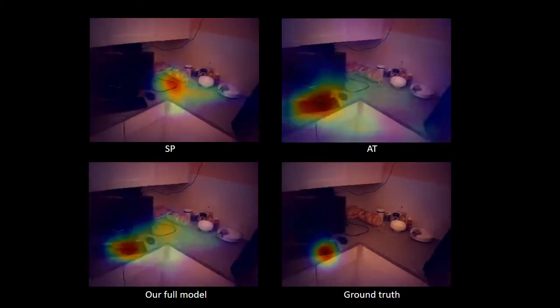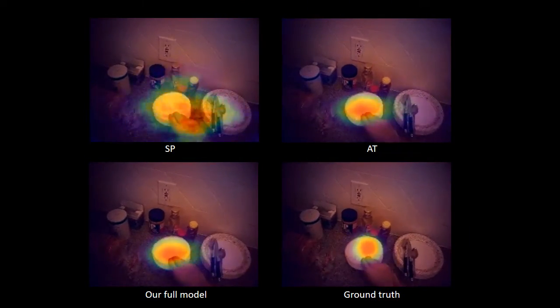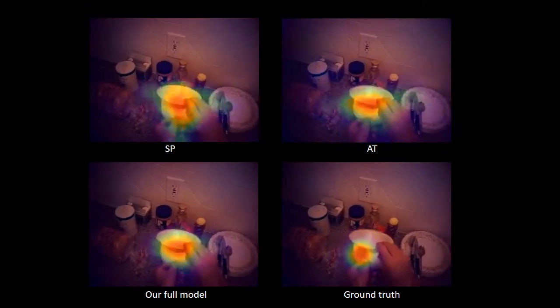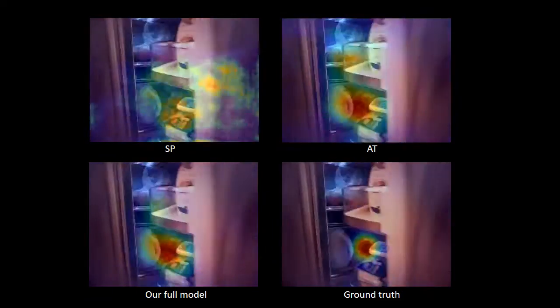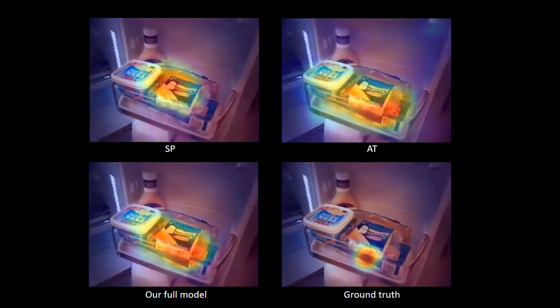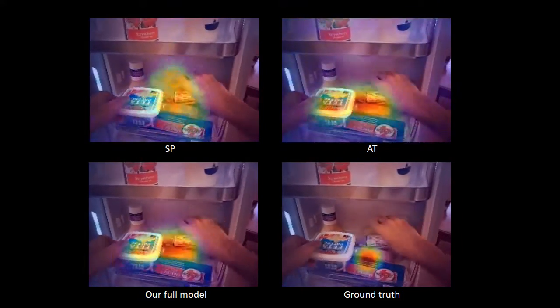In the rest of the video, we will show the results of different parts of our model as well as the full model. First, we show the results on a video sample with normal speed. In the top row, SP represents the saliency prediction module, AT represents the attention transition module. The ground truth is shown in the bottom right.